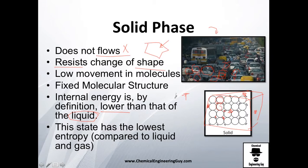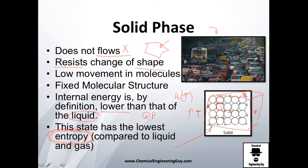Internal energy of a solid is by definition lower than that of a liquid, which makes a lot of sense because internal energy is a function of temperature. At constant pressure, you can be almost sure that the internal energy of a liquid is higher than that of the solid. Regarding entropy, the solid has the lowest entropy of the three phases.